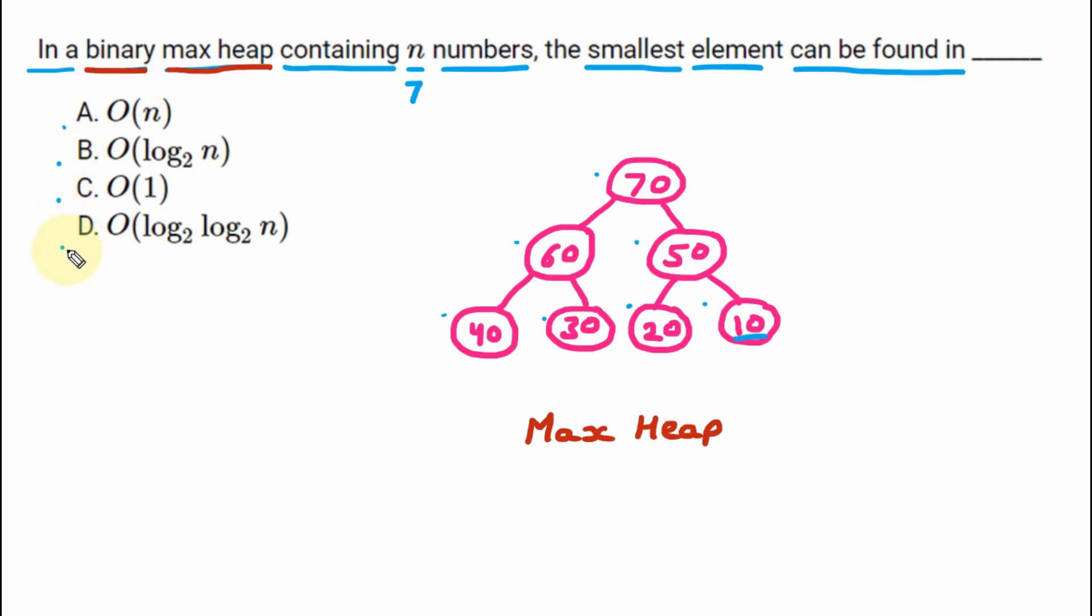Whenever a max heap is given and you want to find the largest element, we know that largest element is always on the top. So here 70 is the largest means only in one comparison, we can find the largest element. So here the answer will be big O of 1. 1 is the constant. But here it is asking the smallest element.